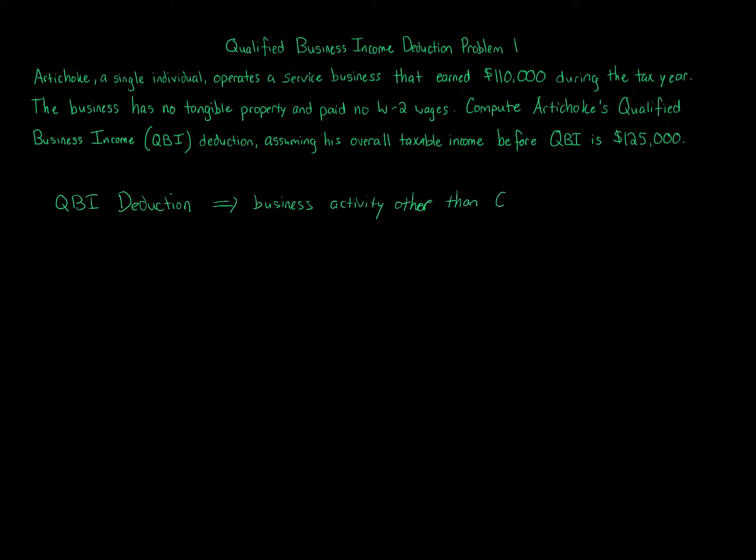Business activity other than C-Corporations. C-Corporation activity is not qualified because this whole provision was put in place because of the benefit that C-Corporations had of a lower tax rate. The benefit really is the most you can get is you take QBI, qualified business income, times 20%, and that creates a deduction that a taxpayer gets.